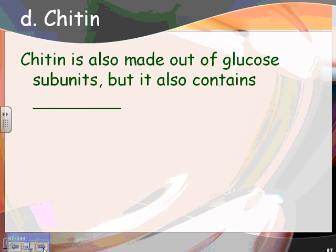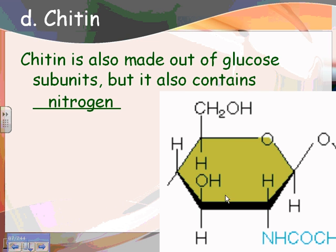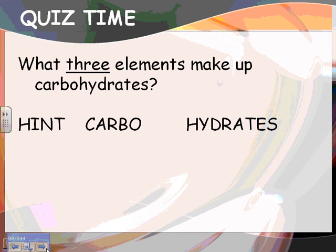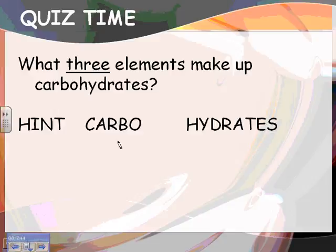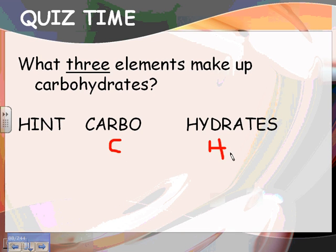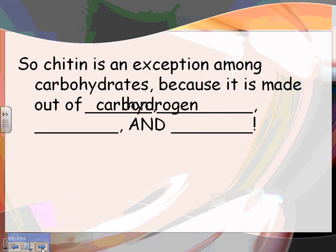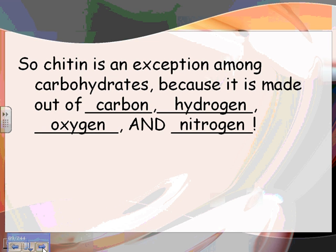The last example is chitin — possibly the coolest because it's different. Chitin is also made of glucose subunits, but it contains nitrogen as well. In a typical glucose molecule you'd have an OH group, but in chitin it's replaced by a nitrogen-containing group. Nitrogen is not normally found in carbohydrates, making chitin an exception. Carbohydrates are typically made of carbon, hydrogen, and oxygen (CH₂O), so memorize those three elements — nitrogen is just an exception found in chitin.